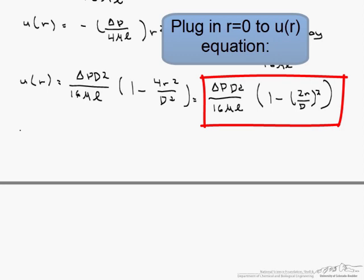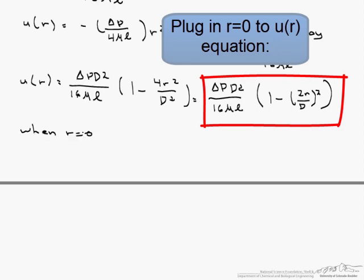And when r equals 0, we get the center line velocity, v sub c, which is delta P d squared over 16 mu times l.